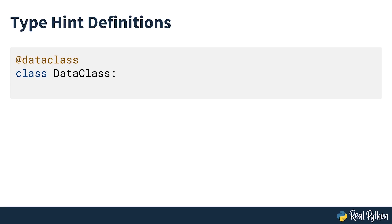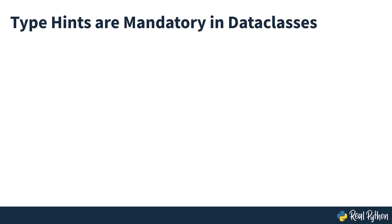So far we've not made a big fuss of the fact that data classes support typing out of the box. You've probably noticed that we defined the fields with a type hint. For example, name: str says that the name should be a text string. In fact, adding some kind of type hint is mandatory when defining the fields in your data class. Without a type hint, the field will not be part of the data class. However, if you don't want to add explicit types, you can use Any from the typing module.